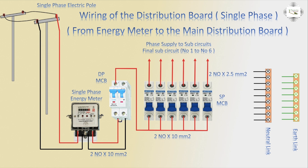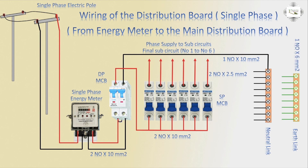Cable number 6126 circuit breaker — SP used with neutral connection to link bar. One phase and neutral common part, circuit breaker neutral cable size 10 mm square. Earth connection cable size 6 mm square — very simple energy meter to HDB connection.